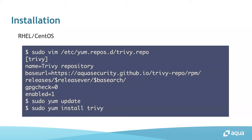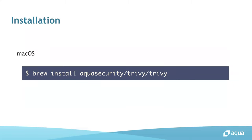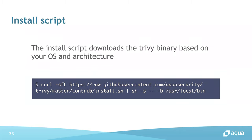If you use macOS, just run brew install aquasecurity/trivy/trivy. It's also easy to install on Debian, Ubuntu, and other OSes. You can also use the install script, which automatically downloads the Trivy binary based on your OS and architecture. So you can install Trivy with a single line regardless of your environment.